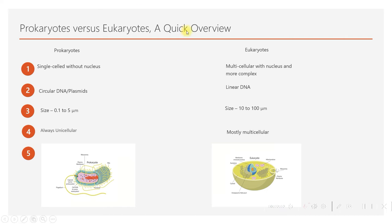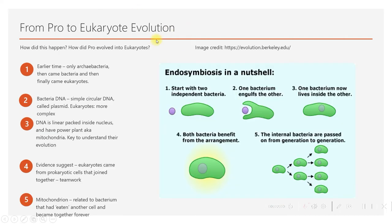Now let's see how the proto-eukaryote simulation happened. As mentioned, when the Earth was formed, only archaebacteria capable of living in an oxygenless environment existed. About one billion years later, when oxygen levels increased, they evolved and became aerobic. After about two billion years, they eventually evolved into eukaryotes due to the increased availability of oxygen — but the question is how.